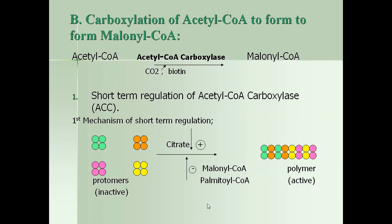Step B: Carboxylation of acetyl-CoA to form malonyl-CoA. The production of malonyl-CoA from acetyl-CoA is the regulatory step of fatty acid biosynthesis, catalyzed by the regulatory enzyme acetyl-CoA carboxylase. During this carboxylation reaction, biotin acts as a coenzyme, involved in fixing carbon dioxide onto the active carbon of acetyl-CoA to convert it into malonyl-CoA.